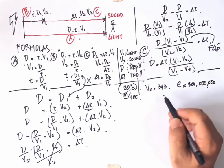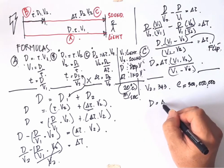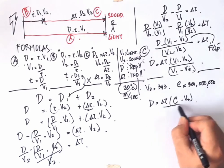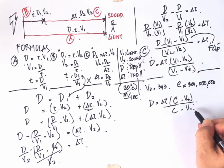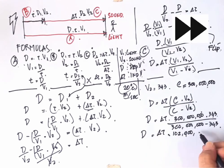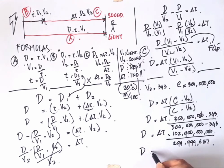Now let us transfer this. It will be D equal to delta T multiplied by C multiplied by V2 divided by C minus V2. So let us put the values inside.